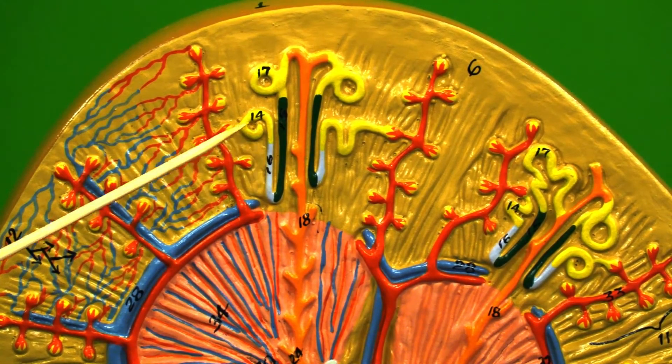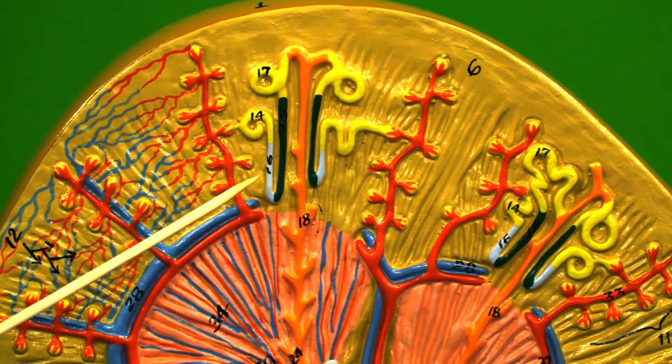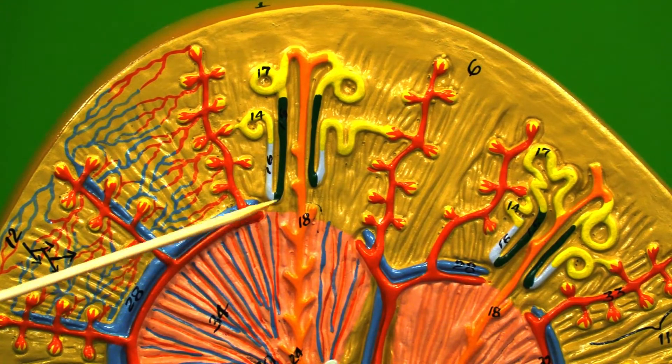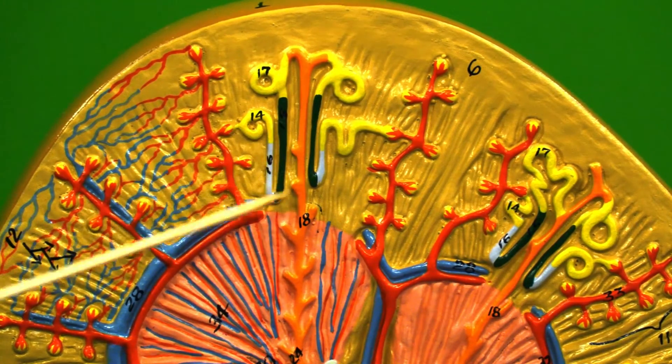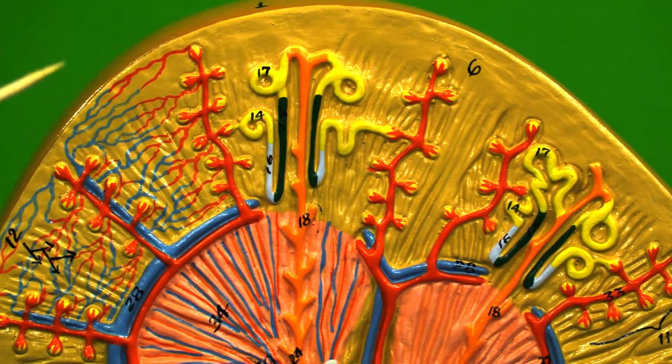The loop of Henle has a descending section with permanent aquaporin channels to release water or filter water, and an ascending section with absolutely no aquaporin channels but allows other solutes to leave at that point.